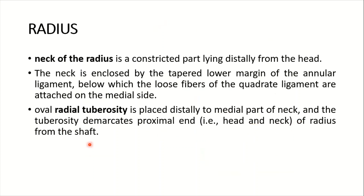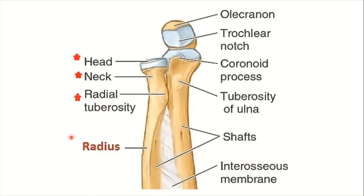The oval radial tuberosity is placed distally to the medial part of the neck and demarcates the proximal end — head and neck of the radius — from the shaft. Here you can see the radial tuberosity, and from here the shaft starts.